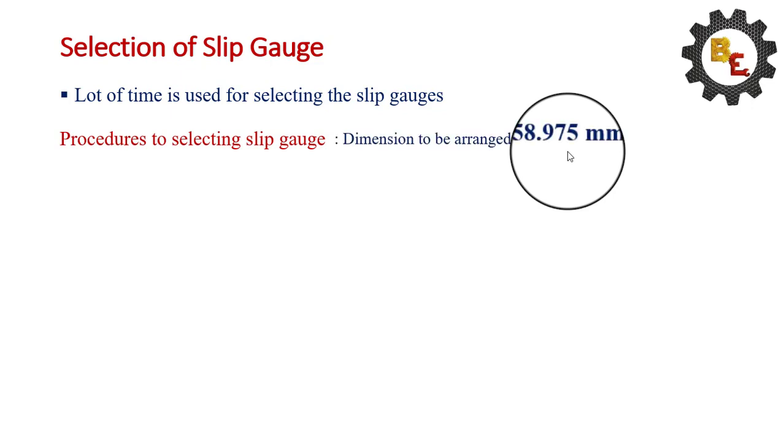For example, we have here the dimension of 58.975 mm. We have to select the slip gauges for these dimensions.